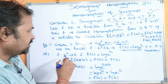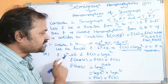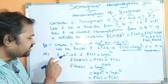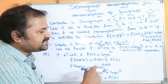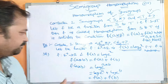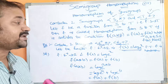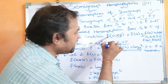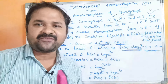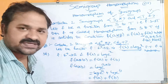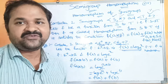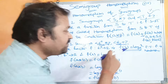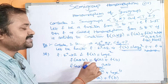Now let us see the solution. The two semigroups given are (R⁺, ★) and (R, +), with the function mapping from R⁺ to R, where R⁺ is the semigroup one set and R is the semigroup two set. F(x) = log(eˣ). To prove homomorphism, we must satisfy the condition F(a ★ b) = F(a) + F(b), where a, b belong to R⁺ and F(a), F(b) belong to R.